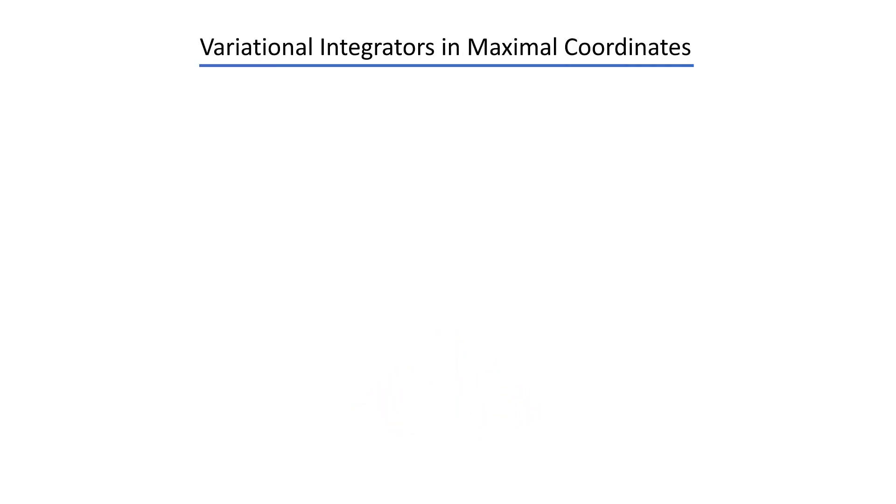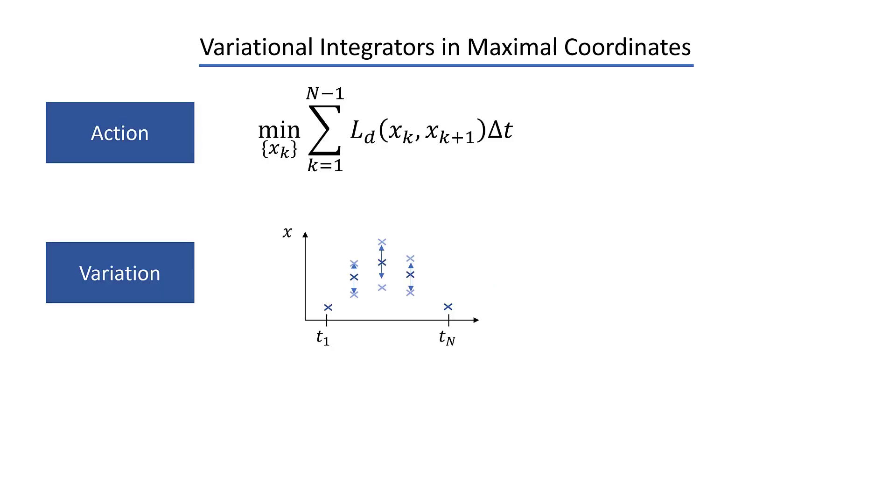Combining variational integrators with maximal coordinates, where again we treat each body individually and add constraints to connect them, is quite straightforward. We start out with the discrete action sum and then vary the discrete trajectory to minimize the action. Since in maximal coordinates we always have to deal with constraints, we also have to look at how to add them to this derivation.